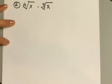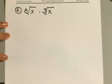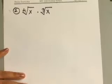We'll look at one more example to get an idea of this different indexes. Here you have 4th root of x and we are trying to multiply that into cube root of x.